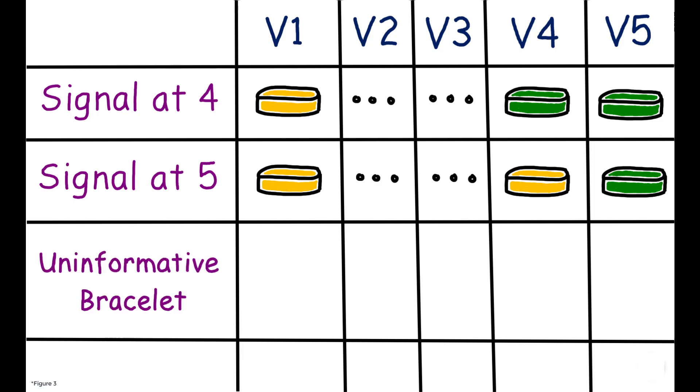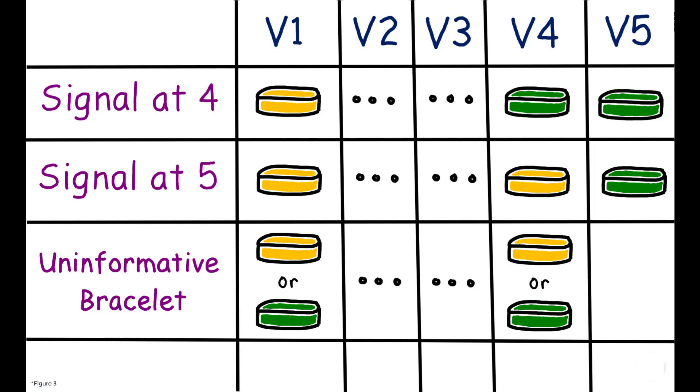In the uninformative bracelet group, parents chose either a green or yellow bracelet at vaccine 1. Children kept the same bracelet for vaccines 2 and 3, and then were given new, but identical, bracelets in the originally chosen color at vaccines 4 and 5.